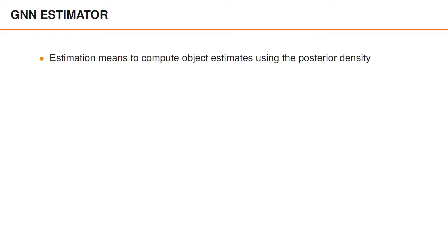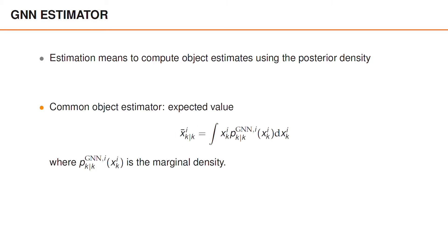Sometimes we wish to do an object estimation, which means to use the posterior density to compute estimates of each object. The purpose could be, for example, to visualize the object tracking results on a screen such that an operator can monitor the performance. Arguably the most common estimator used together with GNN filters and many other tracking algorithms is the expected value. In this case we compute an expected value for each object using the corresponding marginal density. And if we have Gaussian object densities, which is very common, then the expected value is readily available to us as one of the density parameters.